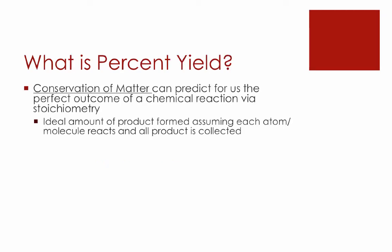So we'll start with a definition of what percent yield actually is. We're going to back up into some older ideas first, the first of which being conservation of matter can predict for us the outcome of a chemical reaction via the process of stoichiometry. What stoichiometry predicts for us is the ideal, and we're going to focus on this word ideal, amount of product formed in a chemical reaction, assuming every single molecule reacts the way it's supposed to, and assuming that all the product is collected and weighed on the balance.